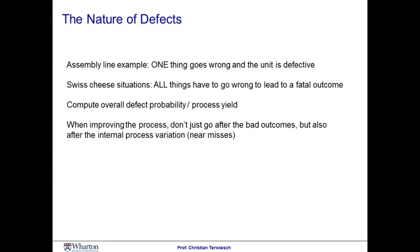In the Swiss cheese situation, we could afford to have some mistakes in the process, but due to redundancy, this would not necessarily lead to a bad unit of output. Multiple things had to stack up in a bad way to lead to that fatal outcome. We've talked about how you can look at the process flow diagram and then think about how to aggregate the individual defects and compute an overall defect probability and that allows you then to compute the process yield. When improving processes like the ones we discussed, especially the Swiss cheese situations, it's important to know that we do not just go after bad outcomes. Hopefully, these bad outcomes at the end of the process are really rare.